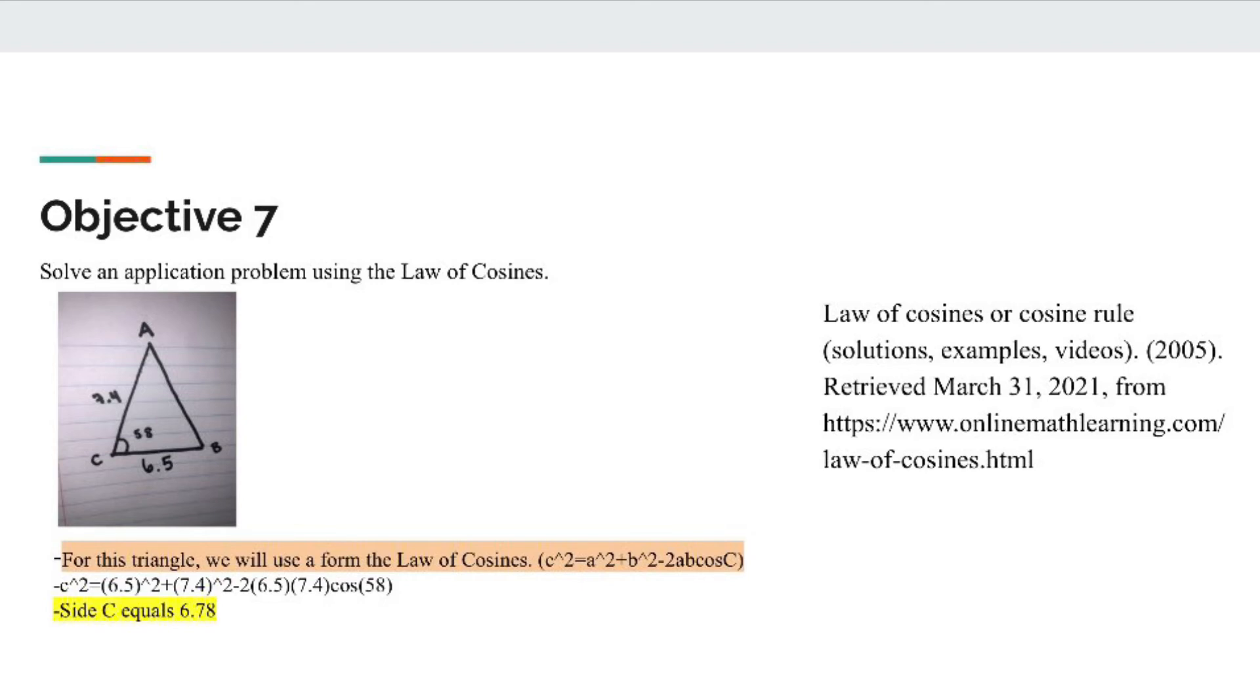For this triangle, I chose to use the law of cosines to find side c. I plugged in everything but c squared into the law of cosines, which got me c squared equals 6.5 squared plus 7.4 squared minus 2 times 6.5 times 7.4 times cosine of 58. You pop all that into the calculator and square root it, and you get side c equals 6.78.